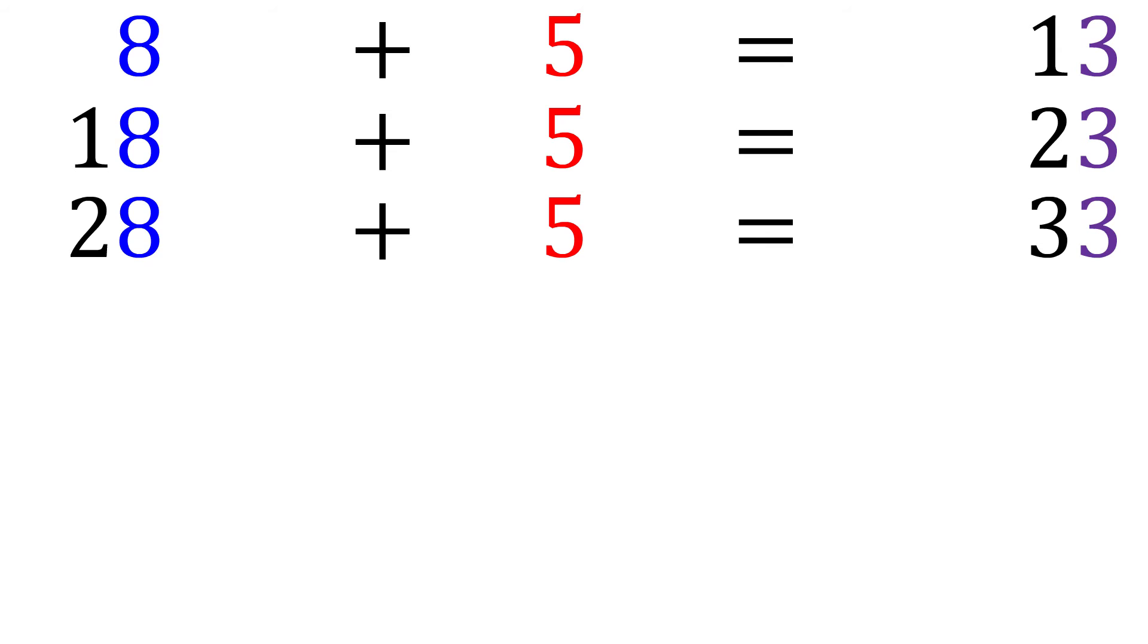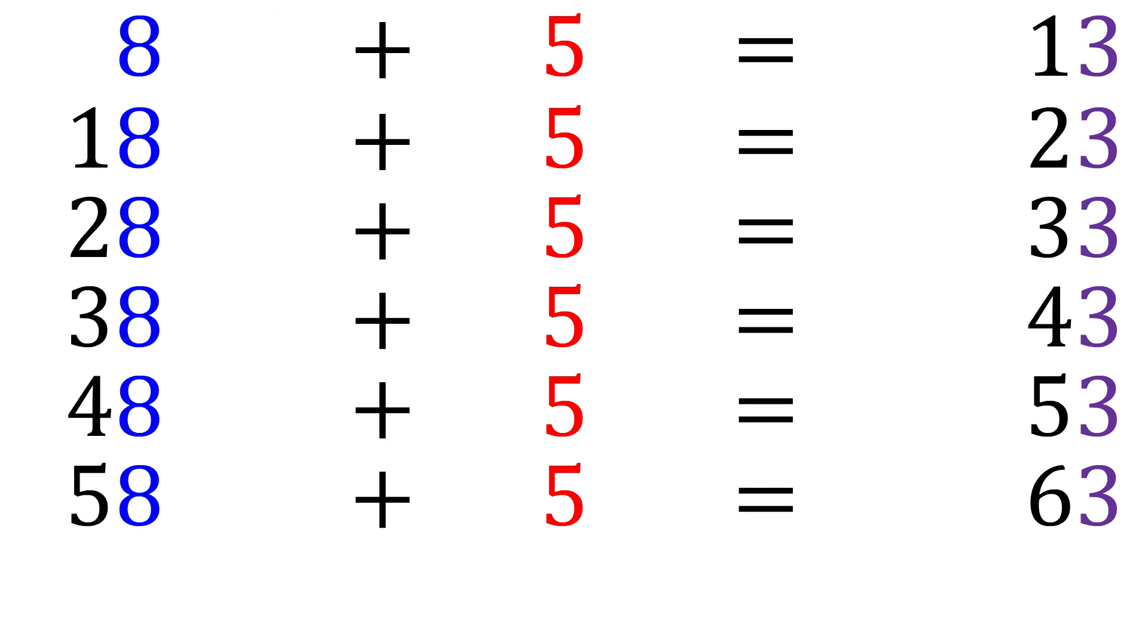You can see how similar addition problems can show a pattern. Here's an example. Eight plus five equals thirteen. Eighteen plus five equals twenty-three. Twenty-eight plus five equals thirty-three. Thirty-eight plus five equals forty-three. Forty-eight plus five equals fifty-three. Fifty-eight plus five equals sixty-three. Sixty-eight plus five equals seventy-three. And so on.